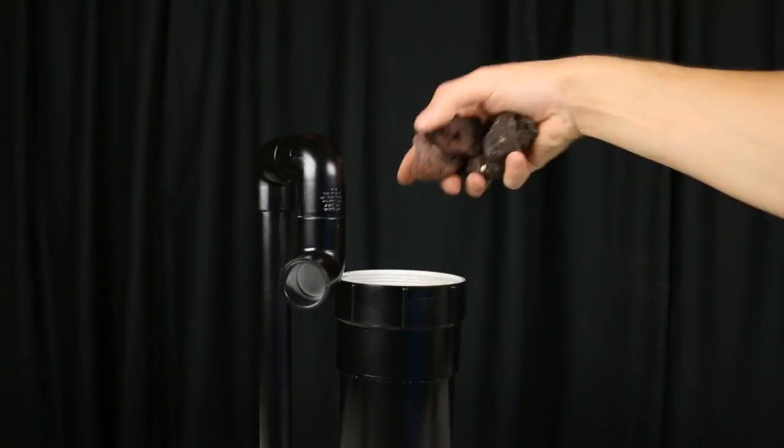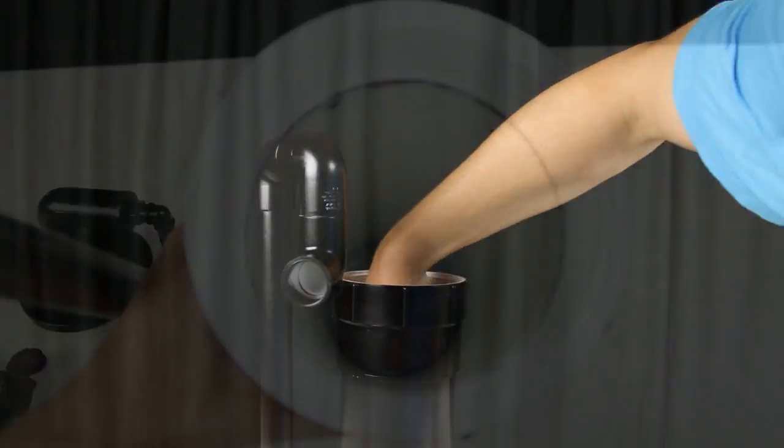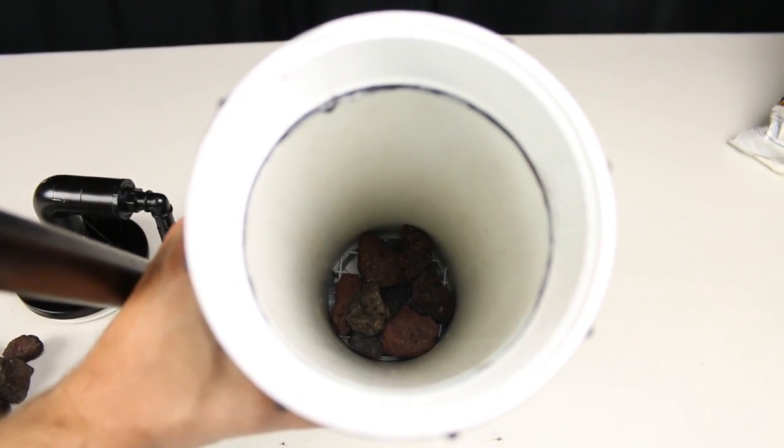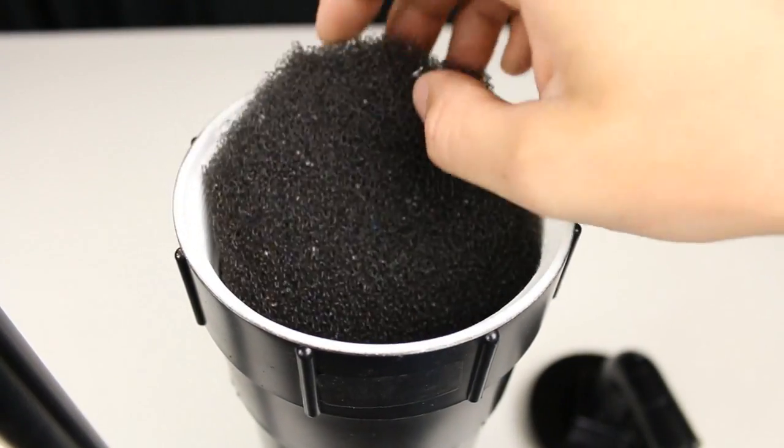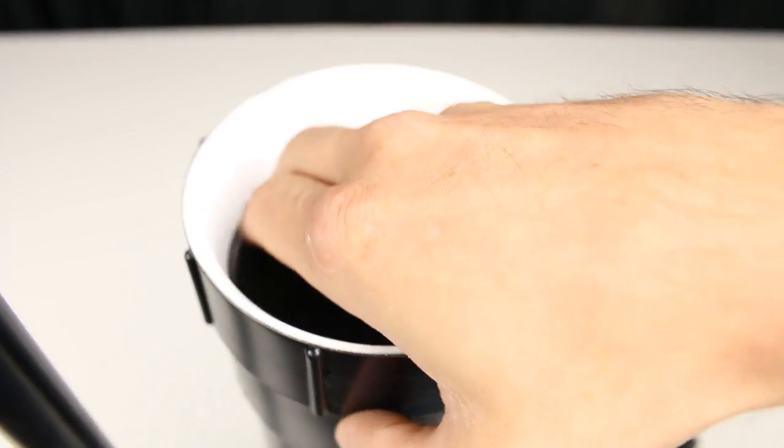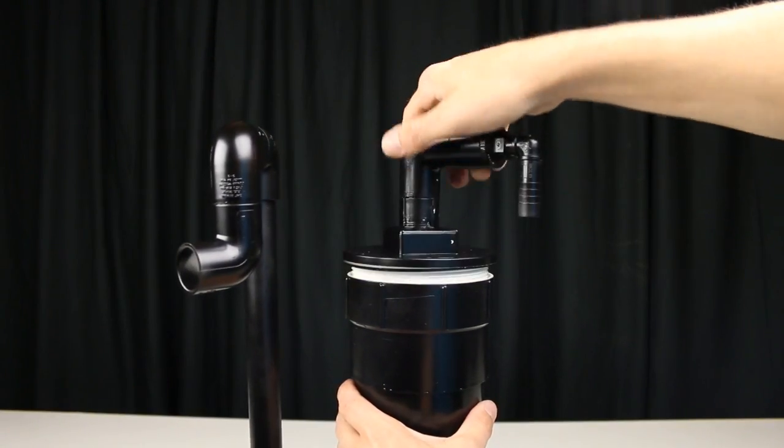Now the way this works is simple. Water is pumped into the top of the filter and it's mechanically filtered first as it passes through that sponge and then biologically filtered as the water passes through the lava rock. Finally exiting at the bottom and pump back up to the top of the tank.